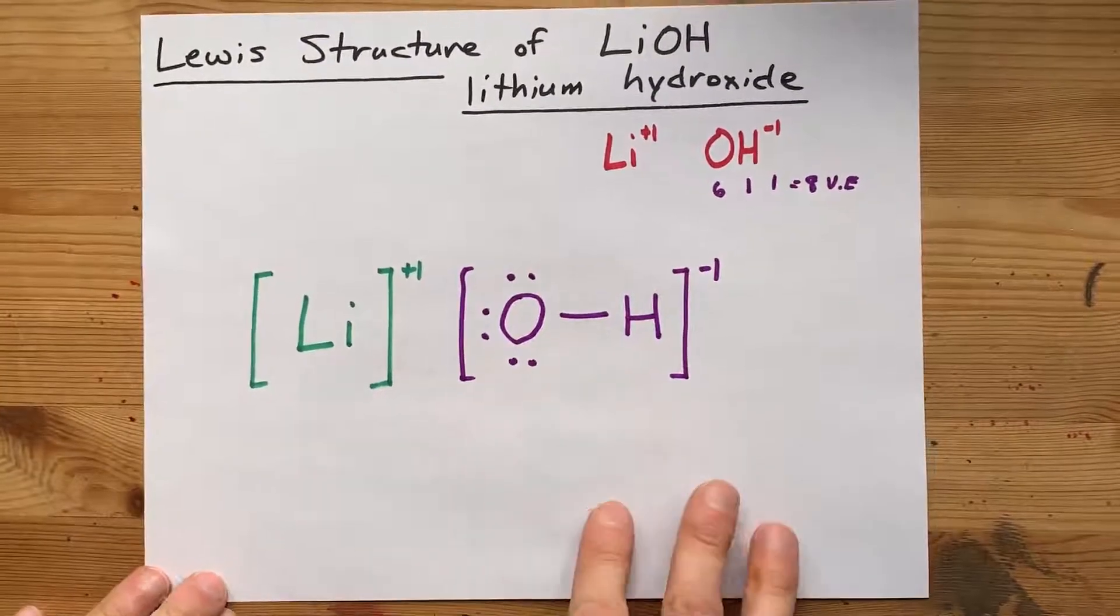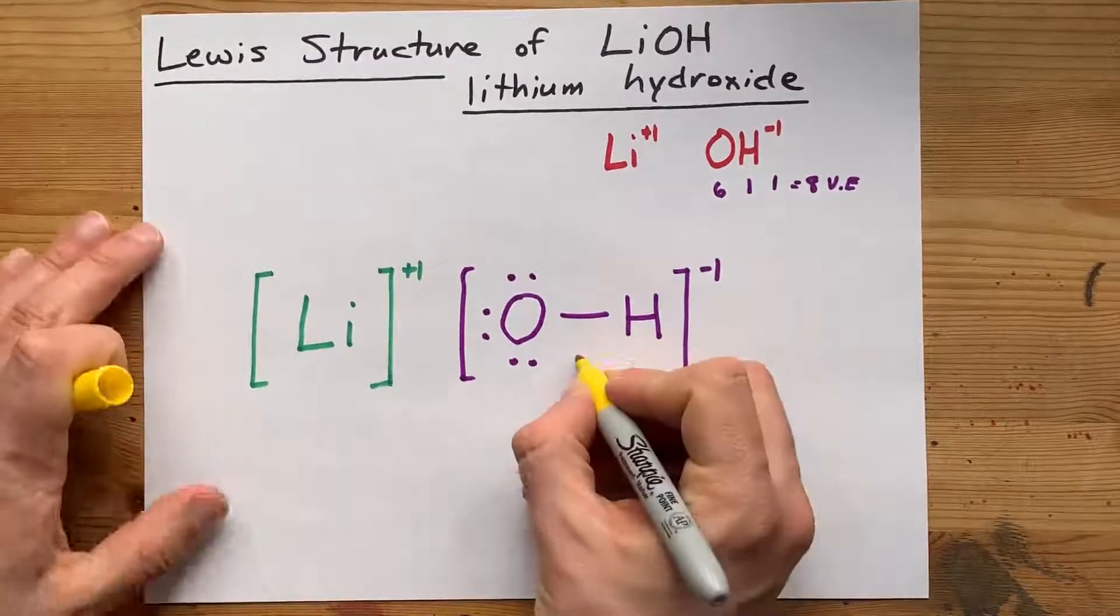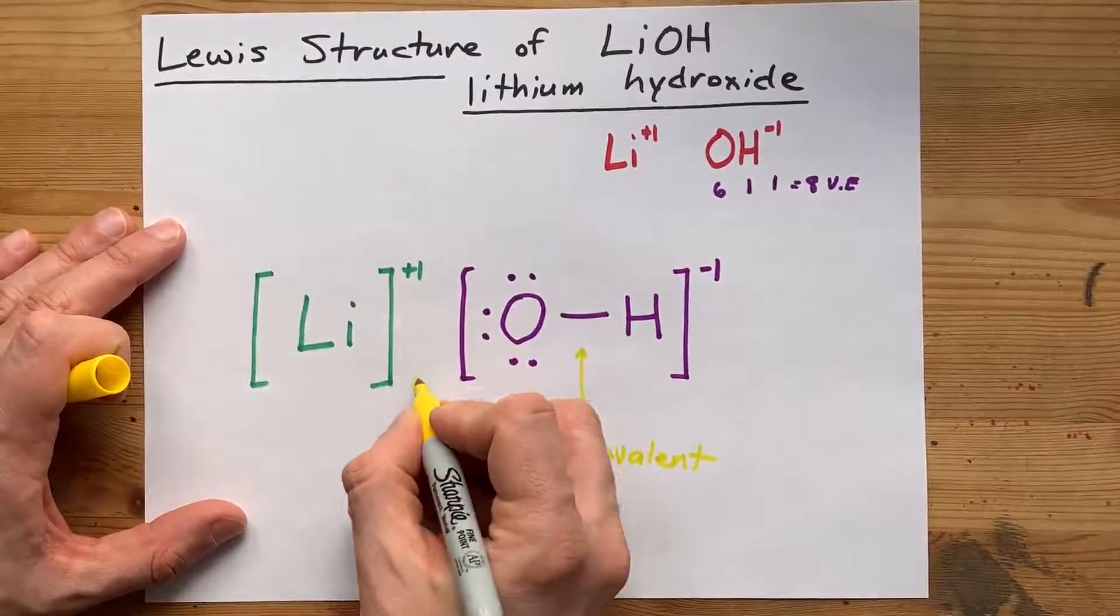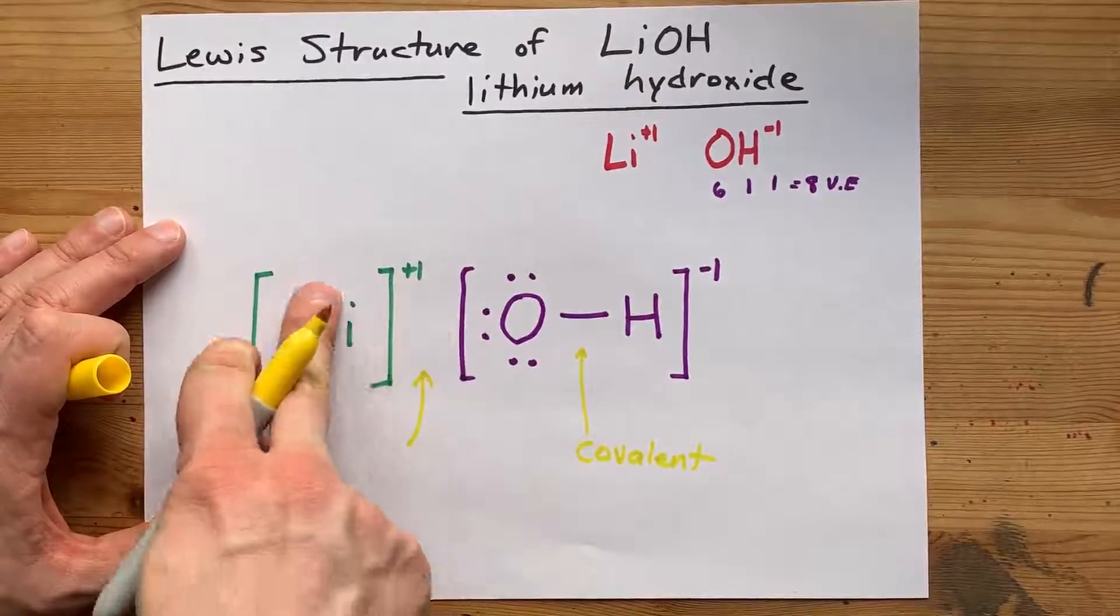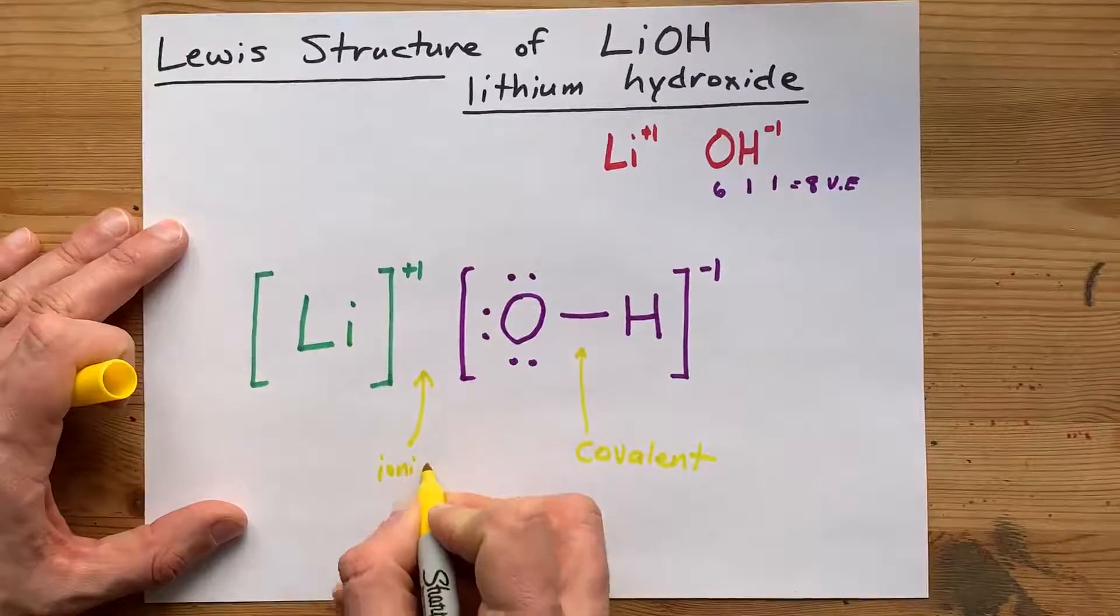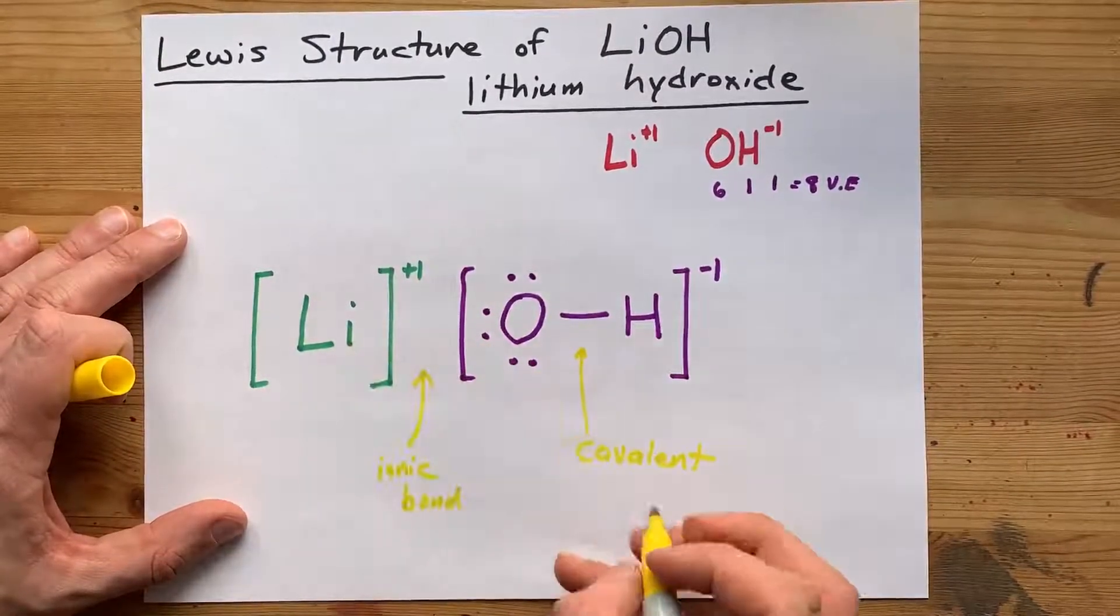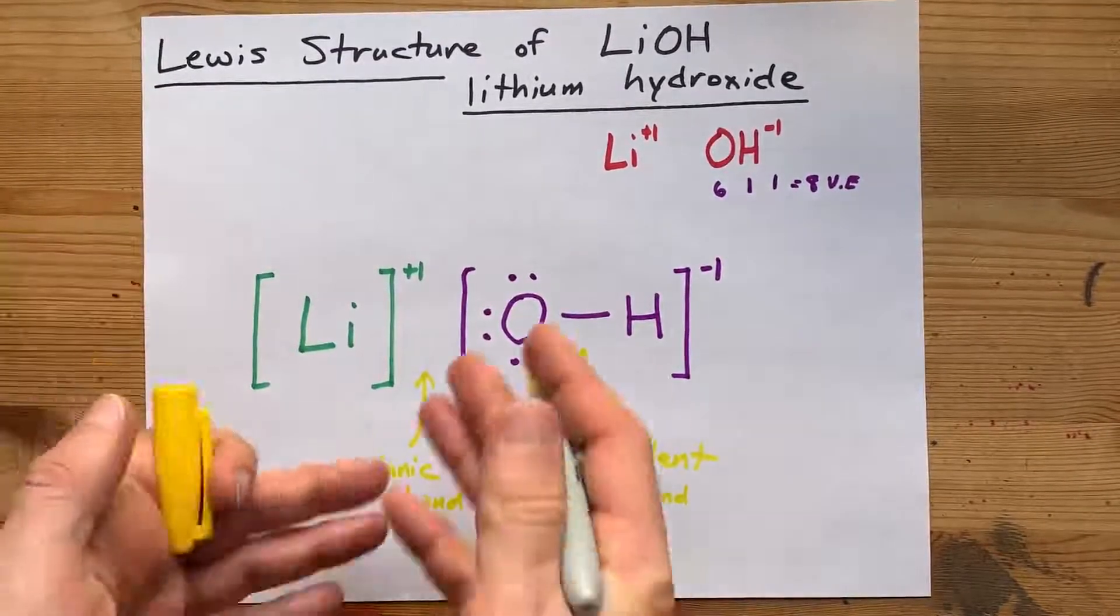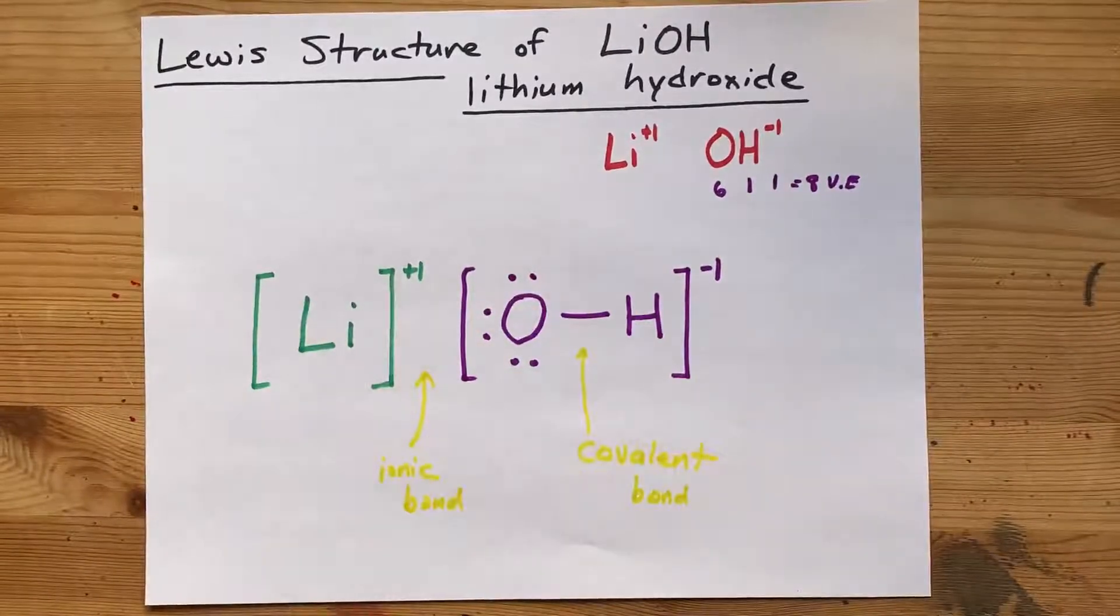This is your Lewis structure for lithium hydroxide. You've got a covalent bond here between the O and the H. And the reason these two chunks, Li and OH, are attracted to each other at all is because there is an ionic attraction or ionic bond between them. Look at that. It's a Lewis structure with both kinds of bonds. C'est la vie. Thanks for being with me and best of luck.